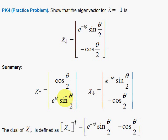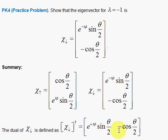Here is our summary. We have spin up relative to an arbitrary axis as a linear combination of the regular spin up and spin down states. And here we have the spin down case along that arbitrary direction. If we define the dual via the Hermitian conjugate — where you exchange rows and columns — basically you flip a column vector into a row and take the complex conjugate.